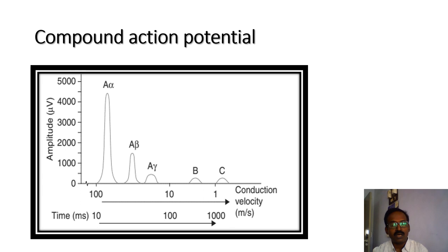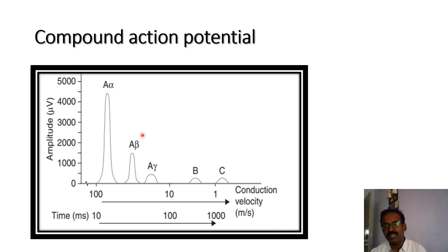This is the diagram of the compound action potential. It gives multiple peaks and a unique shape. Multiple peaks and varying spikes — the varying length of the spike is different due to the different types of nerve fibers having different diameters and different thickness. So the type of nerve fibers, diameter, and conduction velocity produce different types of peaks.